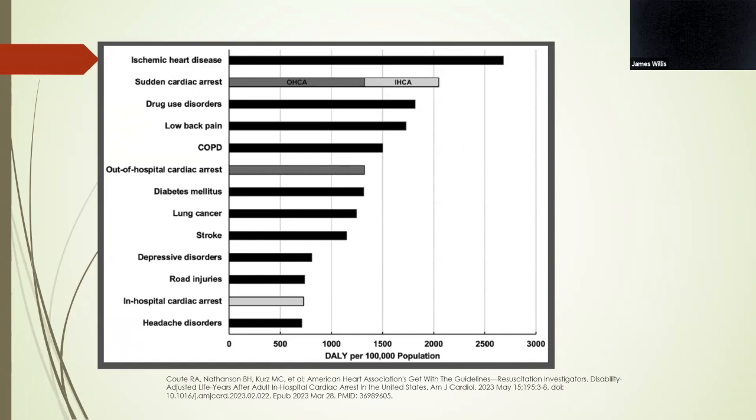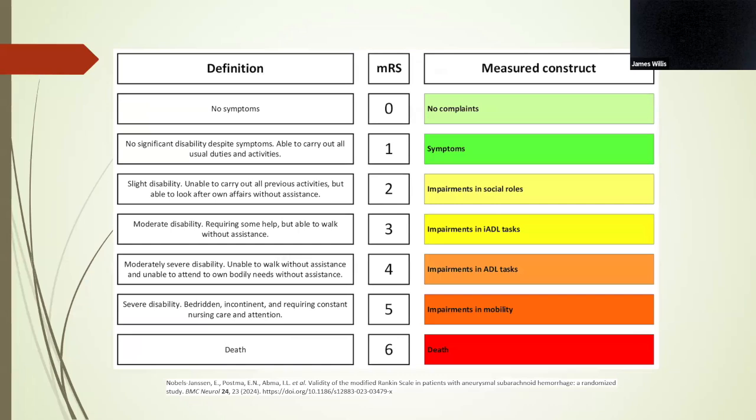And for the junior residents, this is what the modified Rankin scale is. It's a way to quantify a disability. The way I think about it is less than or equal to three means that you can perform your activities of daily living, but you may require some assistance with independent activities of daily living. And then greater than three, you're not able to even perform your IADLs.